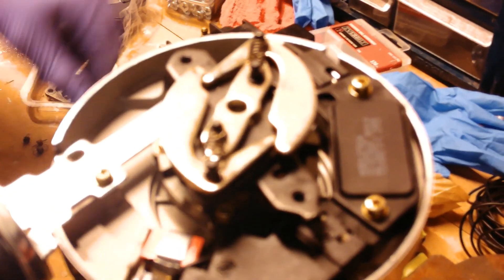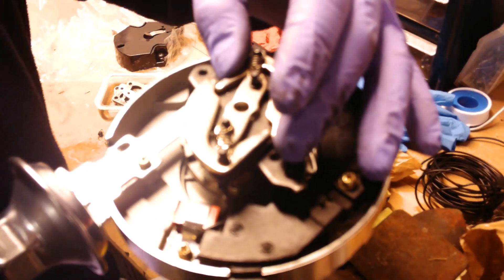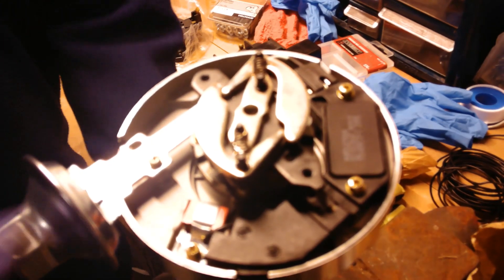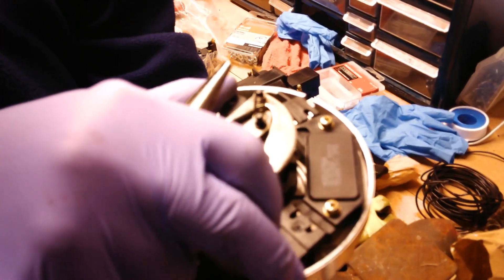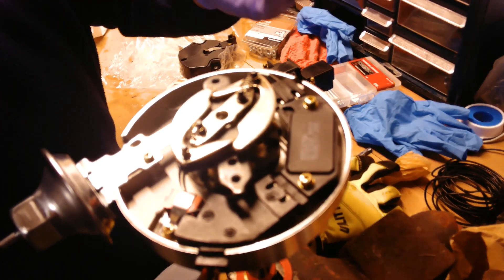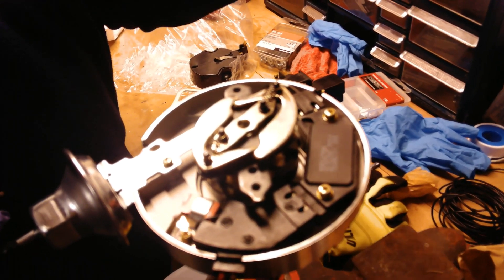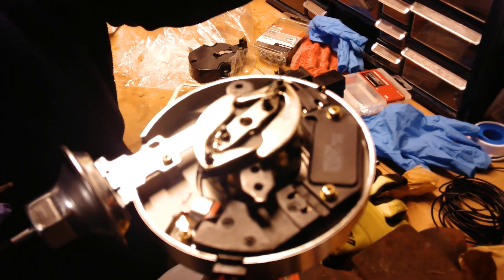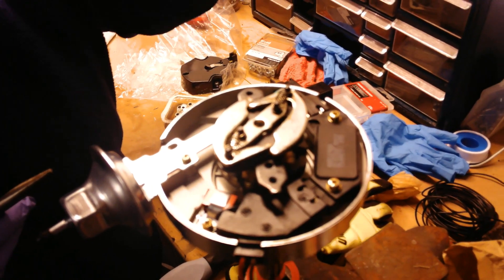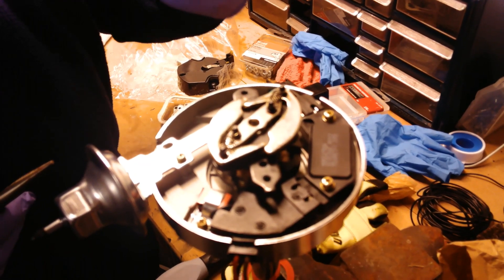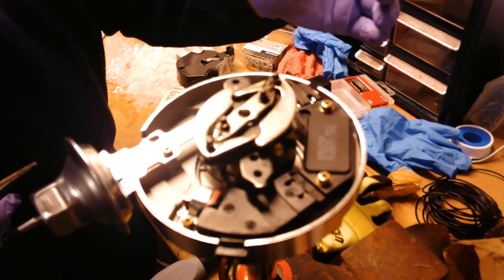It will allow these weights to kick out earlier in the RPM band and open up. Off idle, you may start the initial mechanical advance down low at 1500 RPM, where factory would do it at 3000 or 3500.